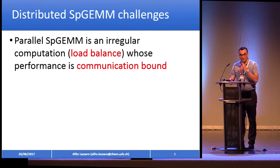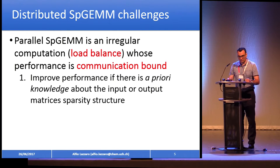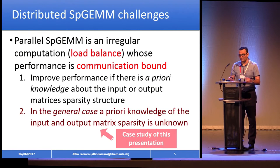Concerning the challenges about sparse matrix multiplication — SpGEMM — you can summarize in a single statement: it's an irregular computation. You can have load balance problems because you want to distribute data over processors, and it is communication-bound. You need to take care of how to move data and reduce that movement. There are two ways to address these challenges: if you know the sparsity pattern a priori you can use that information to improve performance, or in the general case where you don't know the sparsity pattern. We follow this last, general case.